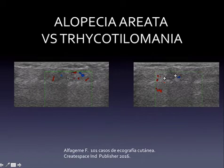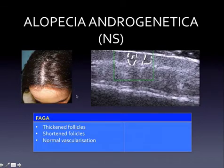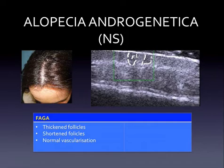The most common alopecia is alopecia androgenetica — a hormone-conditioned alopecia due to increased sensitivity to dihydrotestosterone, the final product of testosterone transformation. Alopecia androgenetica shows thickened follicles, shortened follicles, and normal vascularization, as seen in the structure here corresponding to a hair follicle.